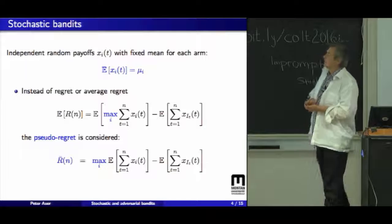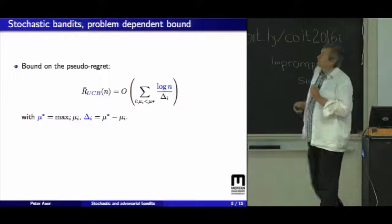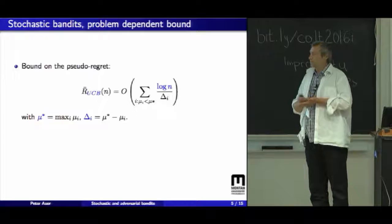And for this pseudo-regret, we have the strong bounds, which are logarithmic in the number of trials. So these are the two settings we are comparing. And what we want is that if the setting is actually stochastic, we want log n regret. And if it's not stochastic, we want at most square root n regret.